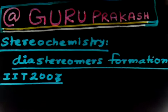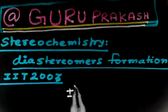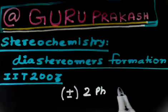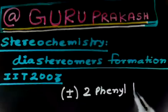Now this question is related to diastereomers formation. So this is a racemic mixture of plus minus 2-phenylpropanoic acid. I have a racemic mixture of plus minus 2-phenylpropanoic acid.